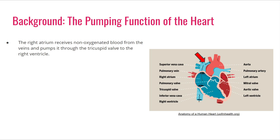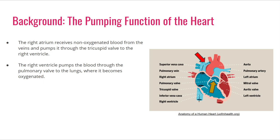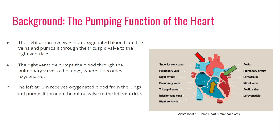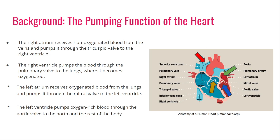Some of the background information I had to learn was how the heart pumps. The heart first receives non-oxygenated blood through the superior and inferior vena cava. This deoxygenated blood goes to the right atrium, through the tricuspid valve into the right ventricle. The right ventricle pumps blood through the pulmonary artery to the lungs where it becomes oxygenated through gas exchange. Oxygenated blood then enters the heart through the pulmonary veins into the left atrium, passes through the mitral valve into the left ventricle, and is pumped through the aorta to the rest of the body.